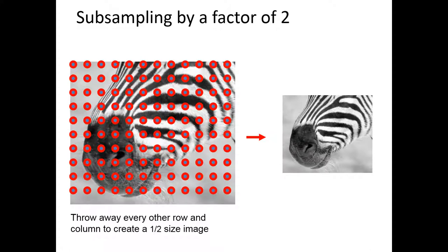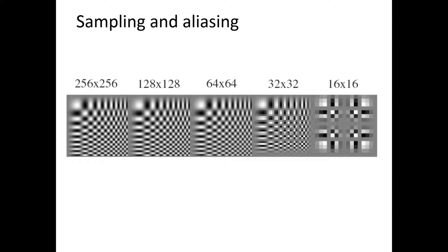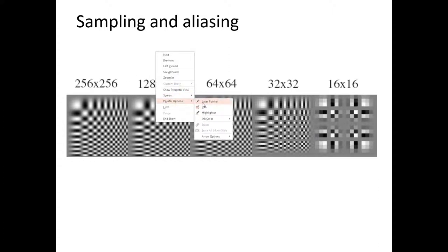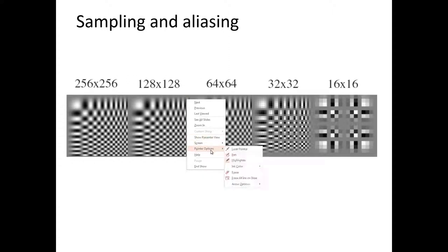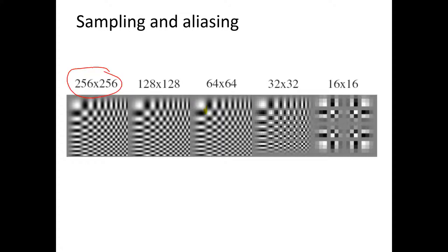If you've taken DSP, you must have heard that when you down-sample, what may happen? Aliasing. If you do down-sampling directly — for example, sampling every odd pixel — going from 256×256 to 128×128 — you eventually get aliasing really bad, with a pattern totally different from the original. If I have a sinusoidal wave at a particular frequency and I down-sample it, I lose the frequency information and get a totally different frequency.